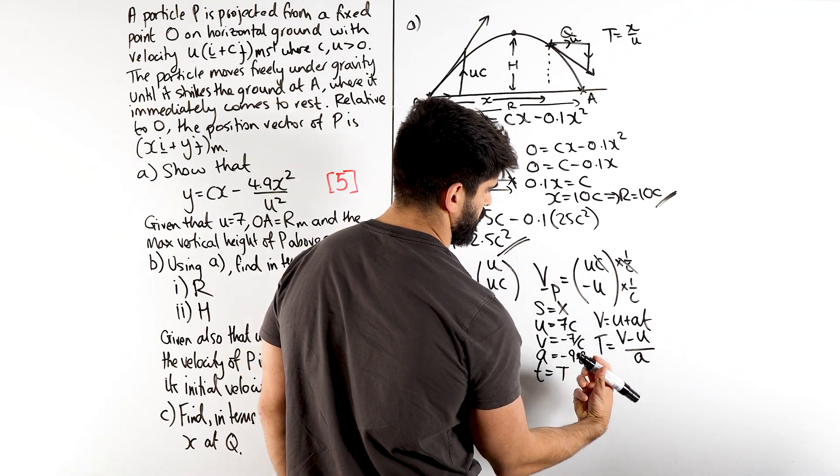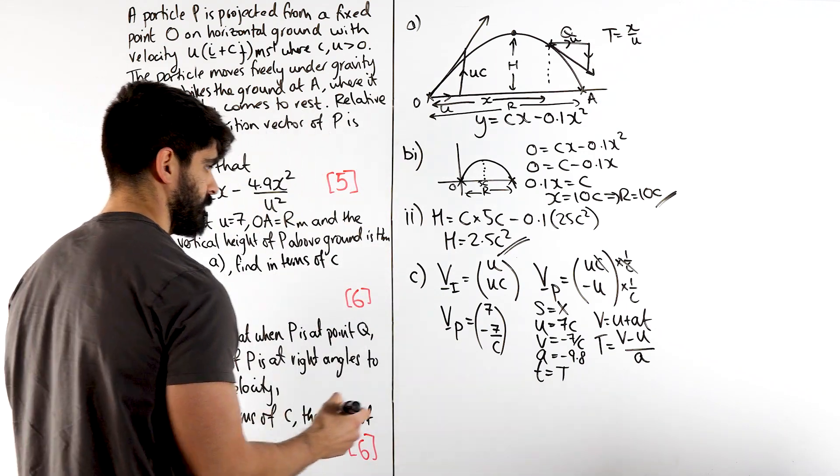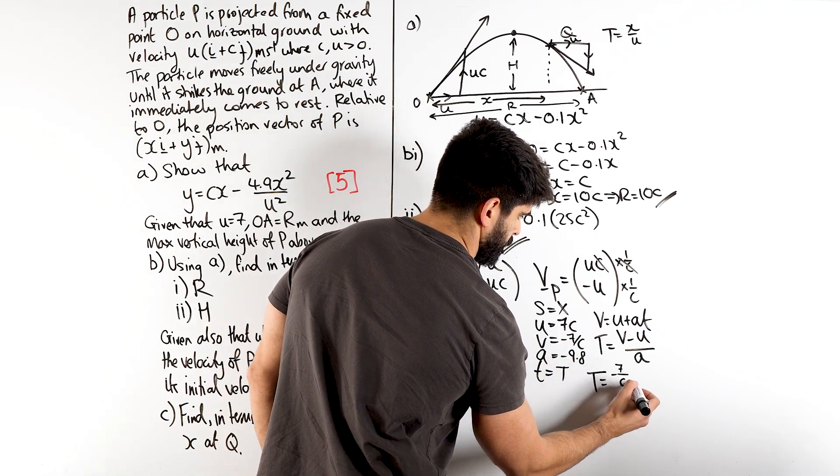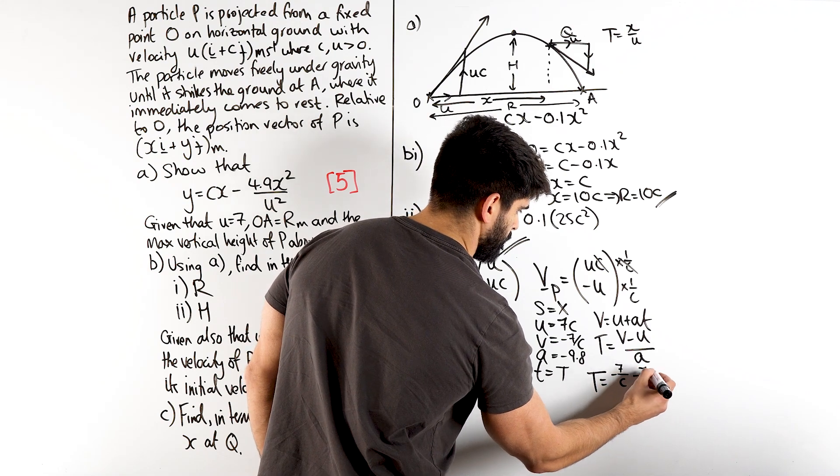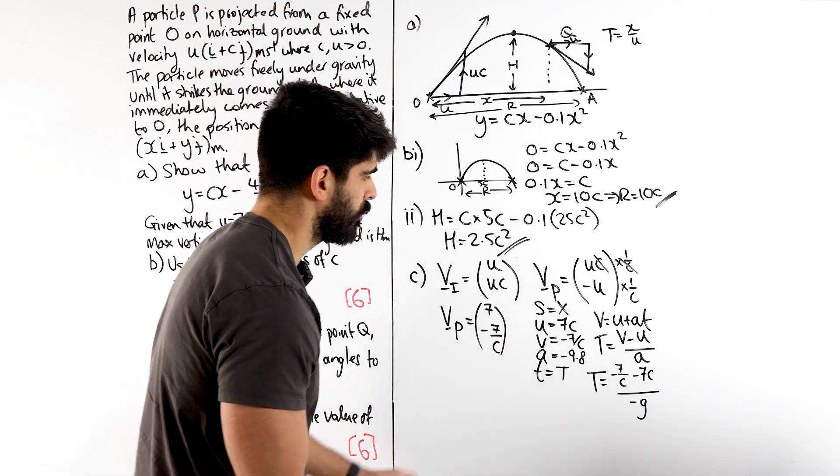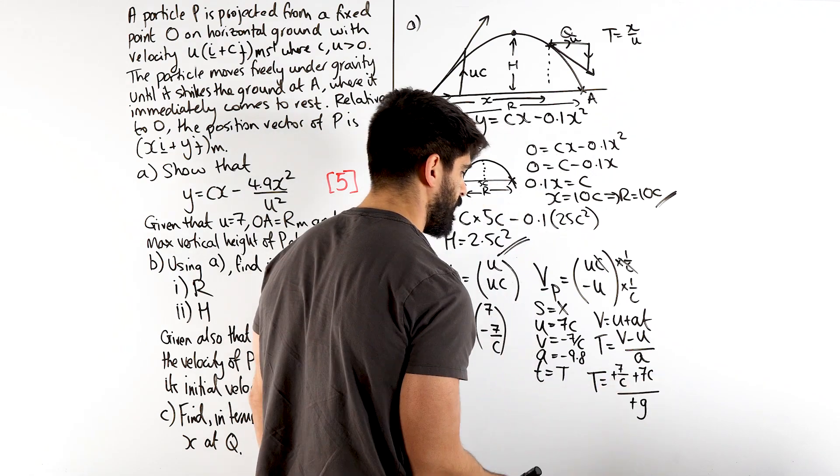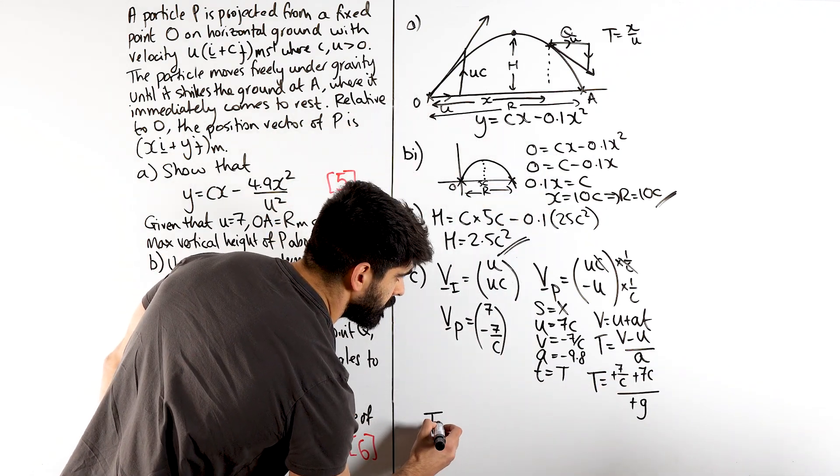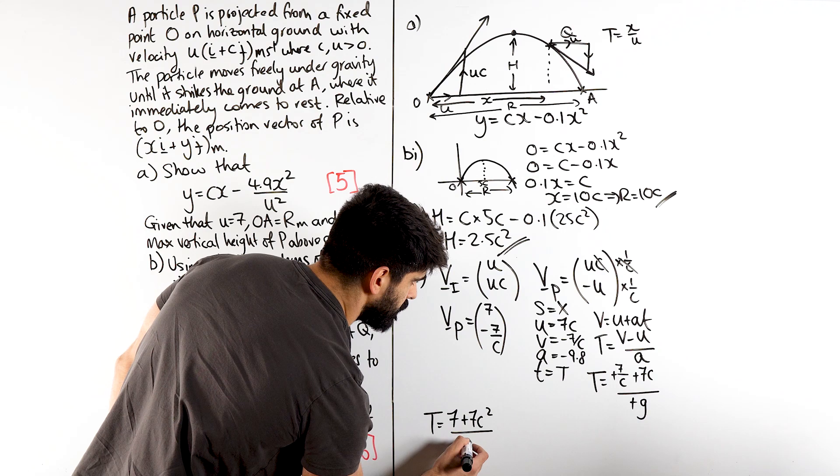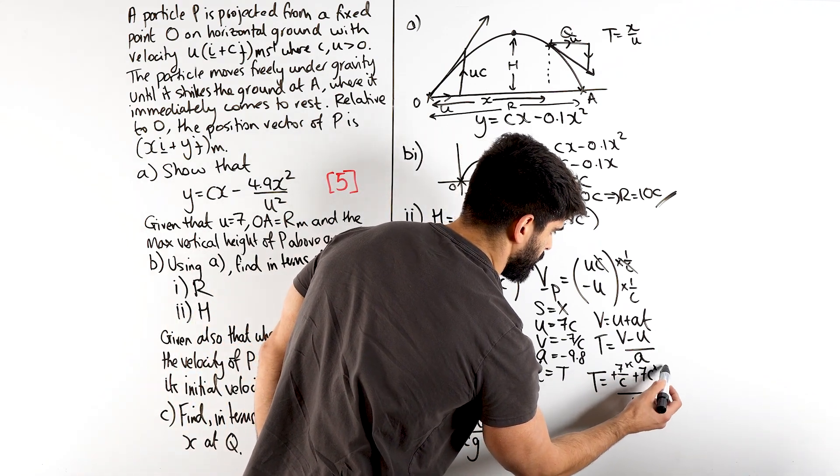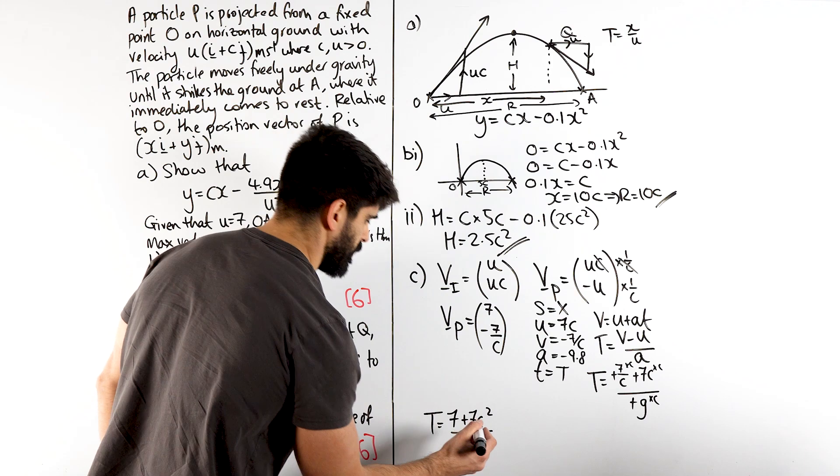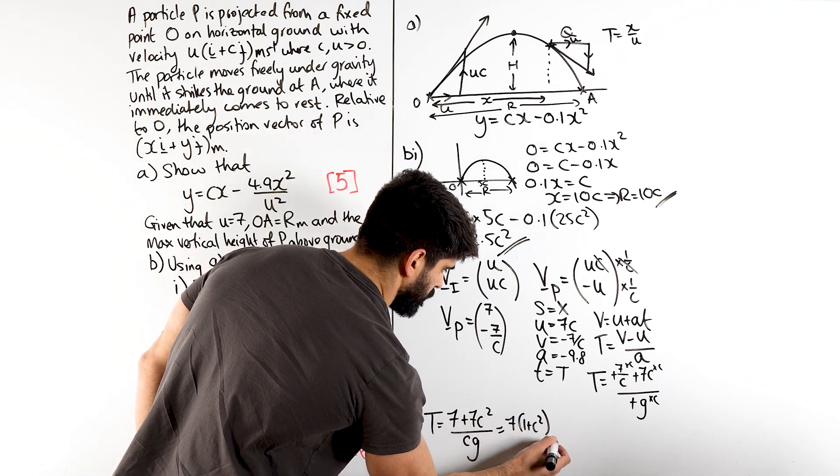I would be better if we write in terms of G, I wonder. They don't really tell us. So, T is V, which is minus 7 over C, minus U, which is 7C, divided by, I'm going to write minus G. And obviously, we can clean that up. All the negatives cancel. Times top and bottom by C. So, we get T is 7 plus 7C squared over CG. Yes, that's me timesing everything by C to get rid of that denominator. And then I guess you can factorize out 7. Should we just do that? So, we get 7, 1 plus C squared, all over CG.